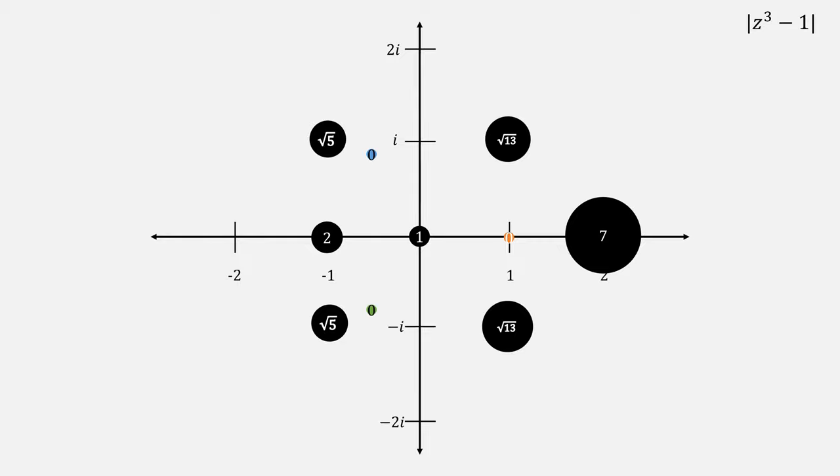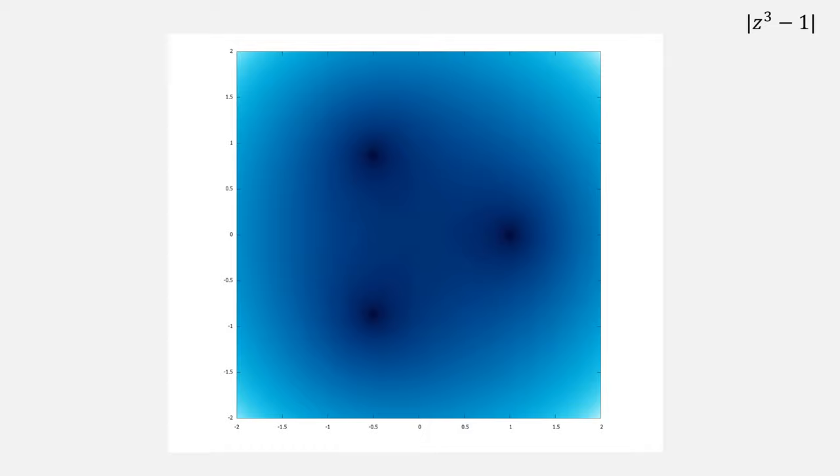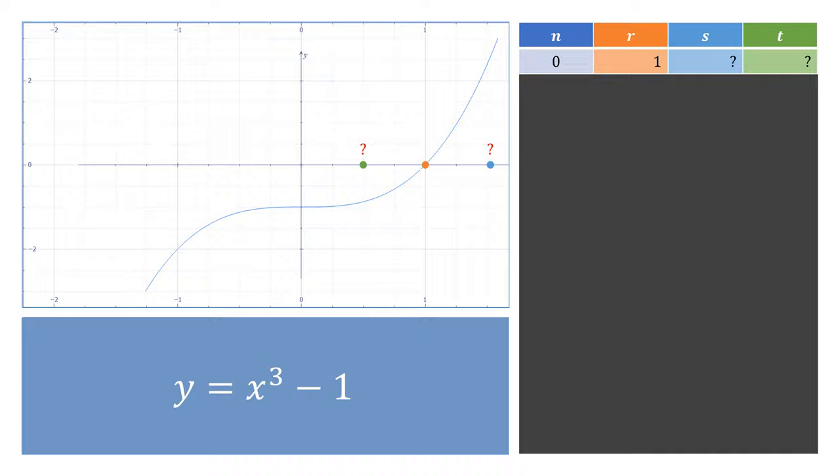It might be more helpful to visualize it in terms of size, but plotting a lot of points this way would still be difficult, therefore it's actually nicer if we use color. Here, the darkest parts are the solutions to our polynomial.